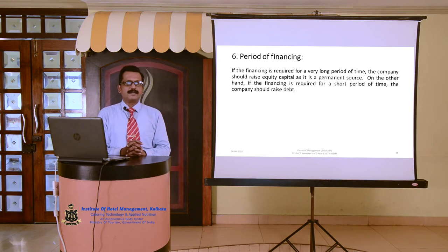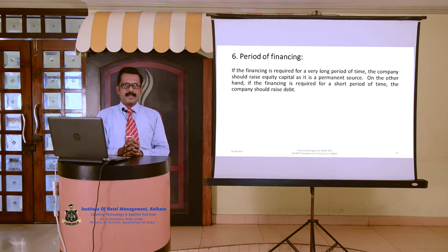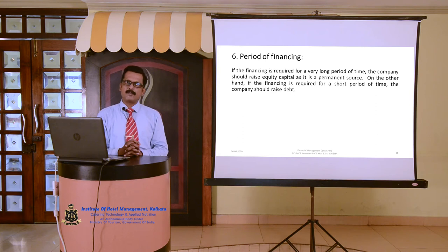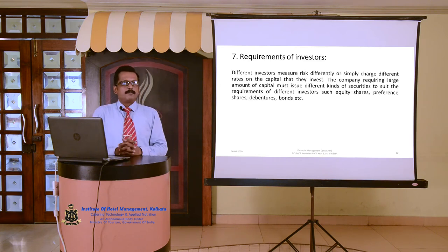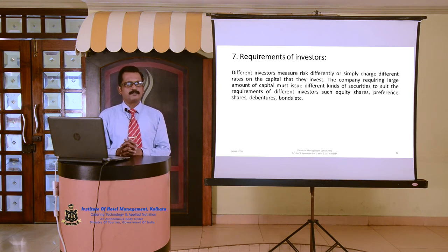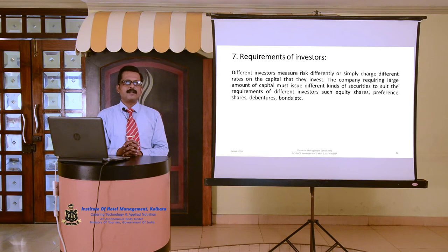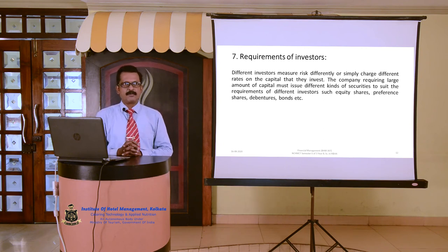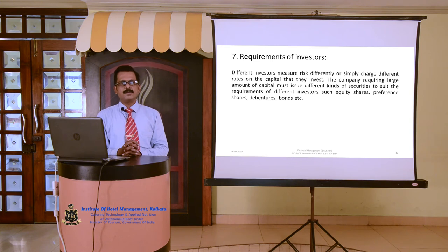Point number 6 is period of financing. If financing is required for a very long period of time, the company should raise equity capital as it is a permanent source of capital. On the other hand, if financing is required for a short period of time, the company should raise debt. Point number 7 is requirement of investors. Different investors measure risk differently and charge different rates on the capital they invest. A company requiring a large amount of capital must issue different kinds of securities to suit various investors, such as equity shares, preference shares, debentures, bonds, etc.